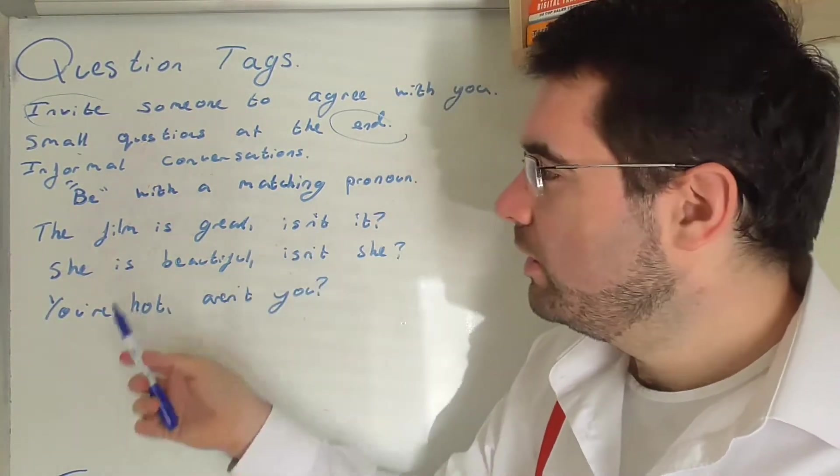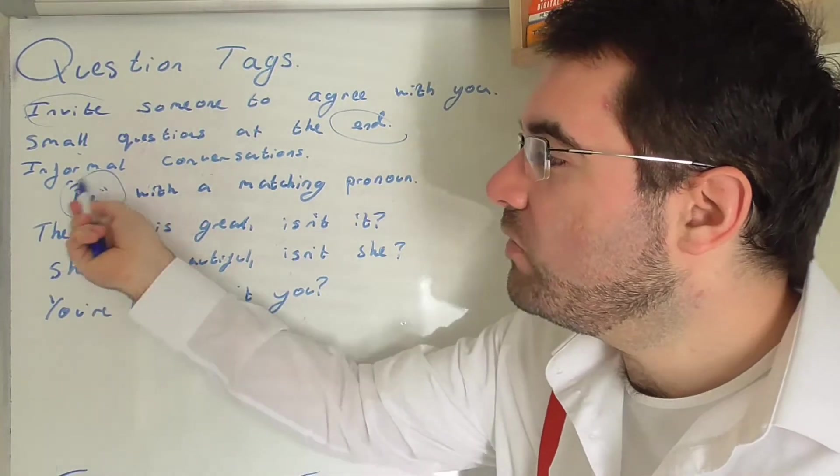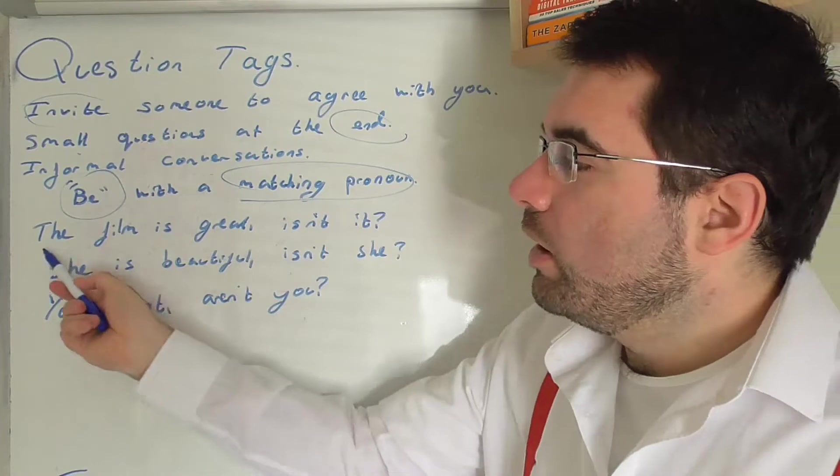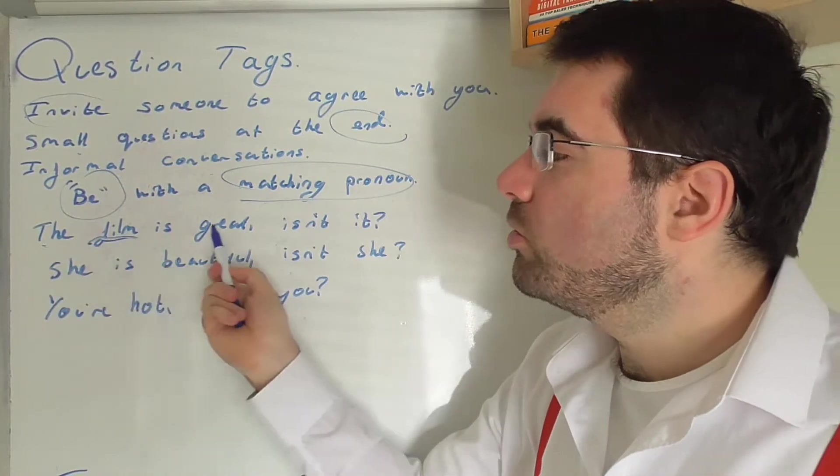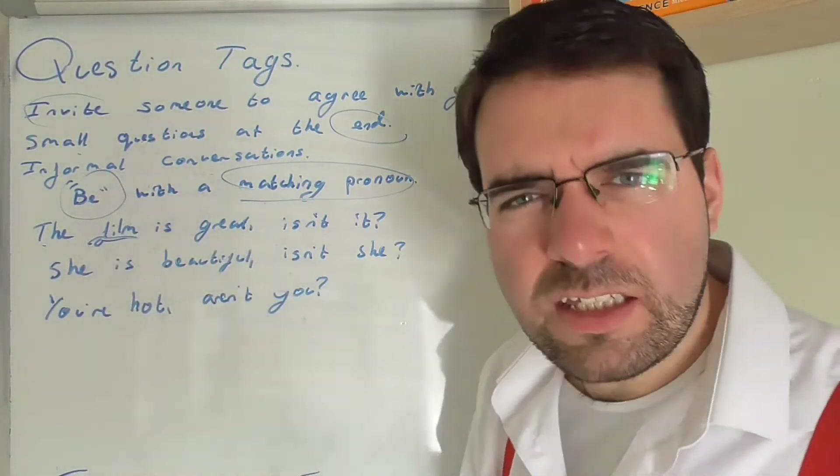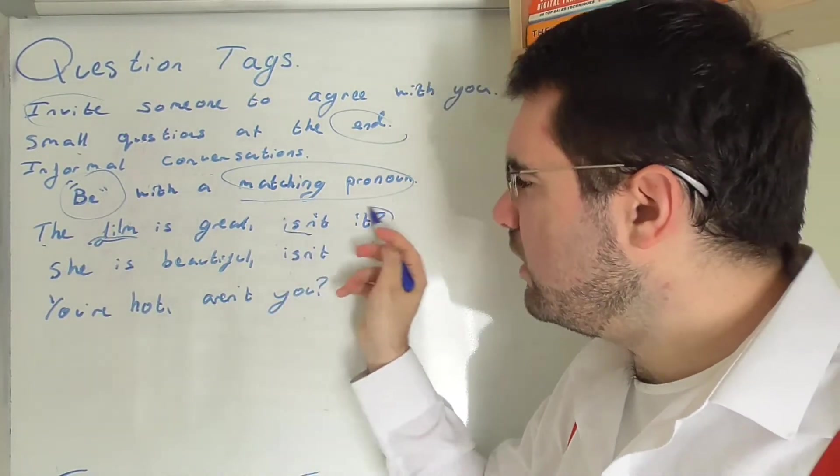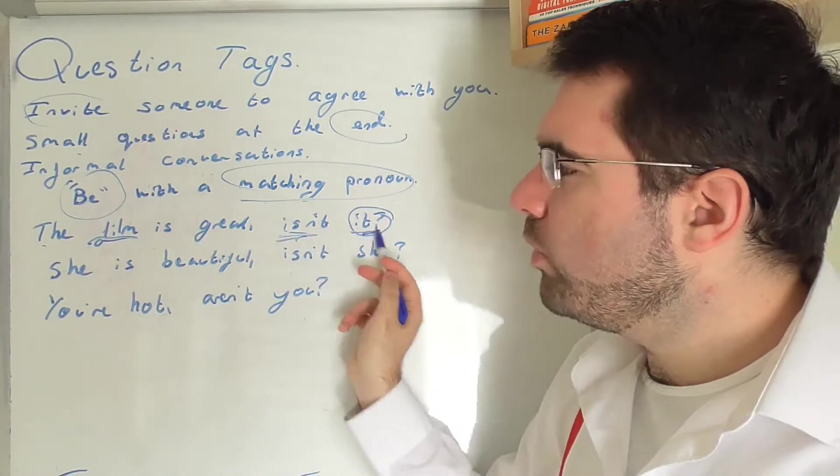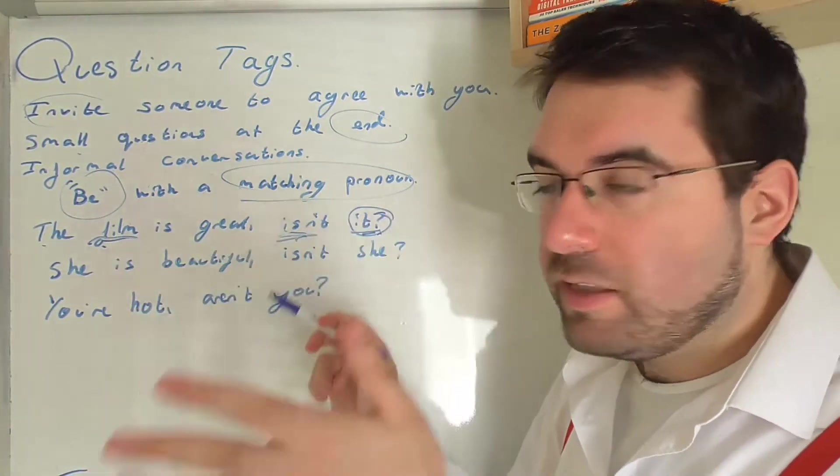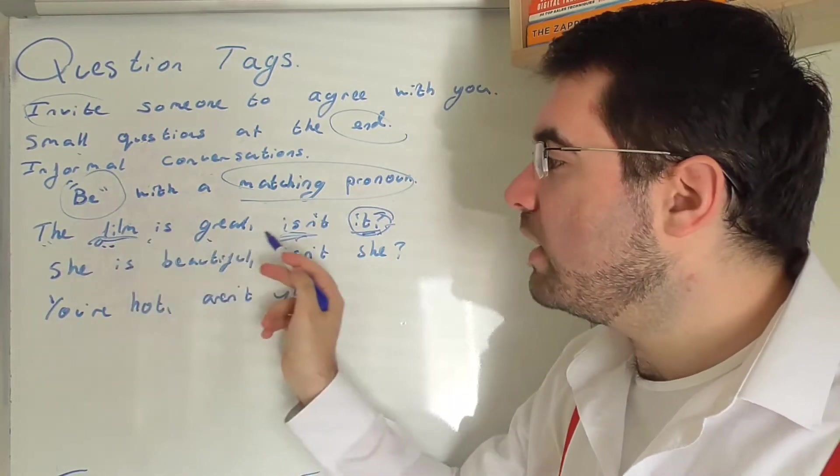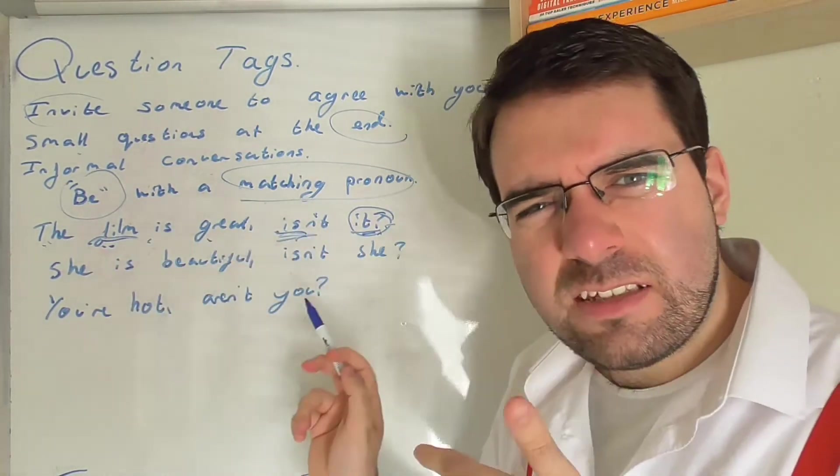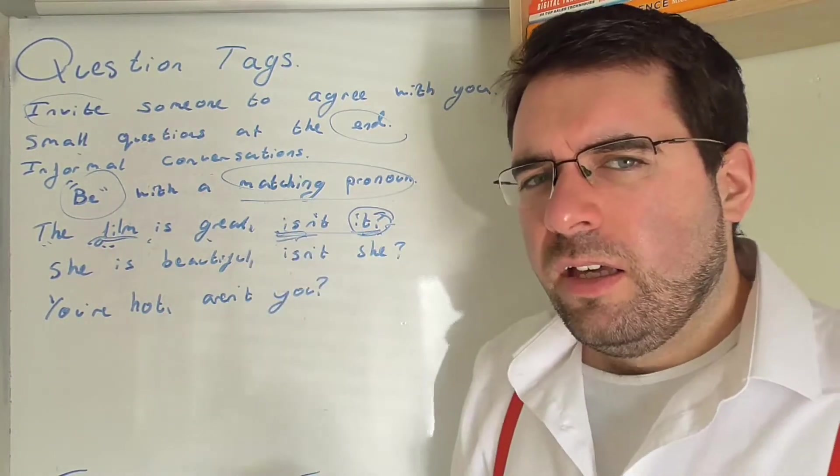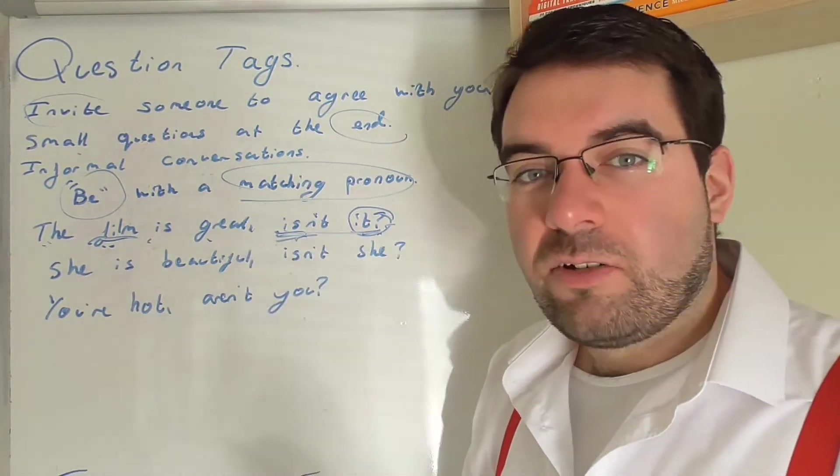So, let's look at some examples. We use the be verb with a matching pronoun, which is interesting. The film is great, isn't it? Here's the be verb and the matching pronoun. Film, it. The film is great, isn't it? Asking, turning a statement into a question. It tags along, creates a question out of it.